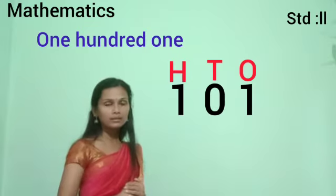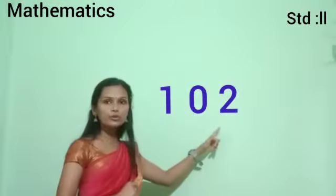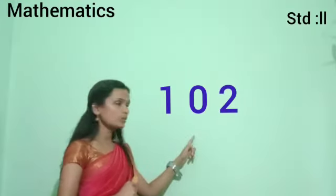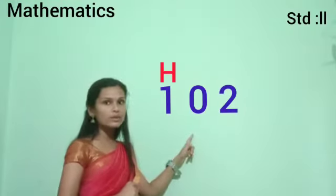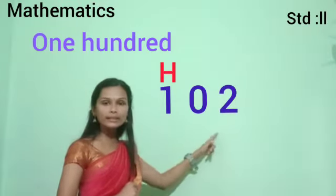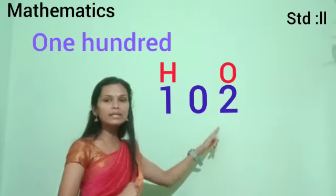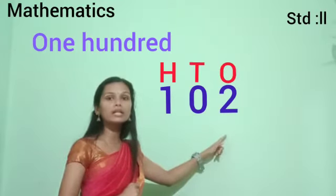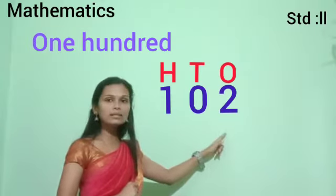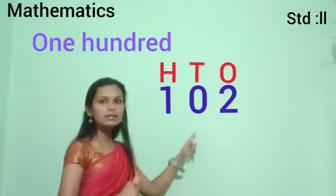Is it clear? Next, 102. The first digit 1 is in the place of 100's, so 100. No need to say 0, 2 separately — take the 1's and 10's together. 0 and 2 is the same as 2. So the number name of 102 is one hundred two.